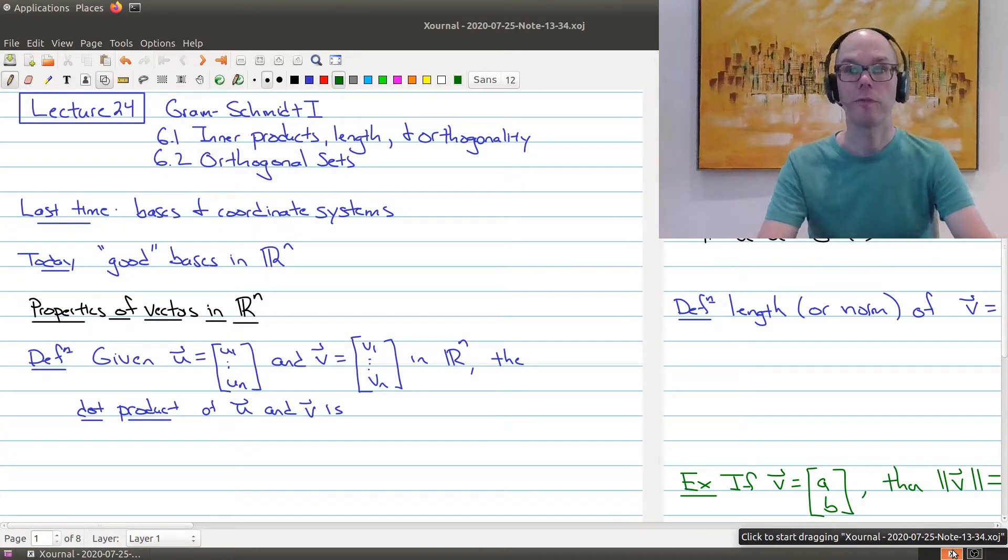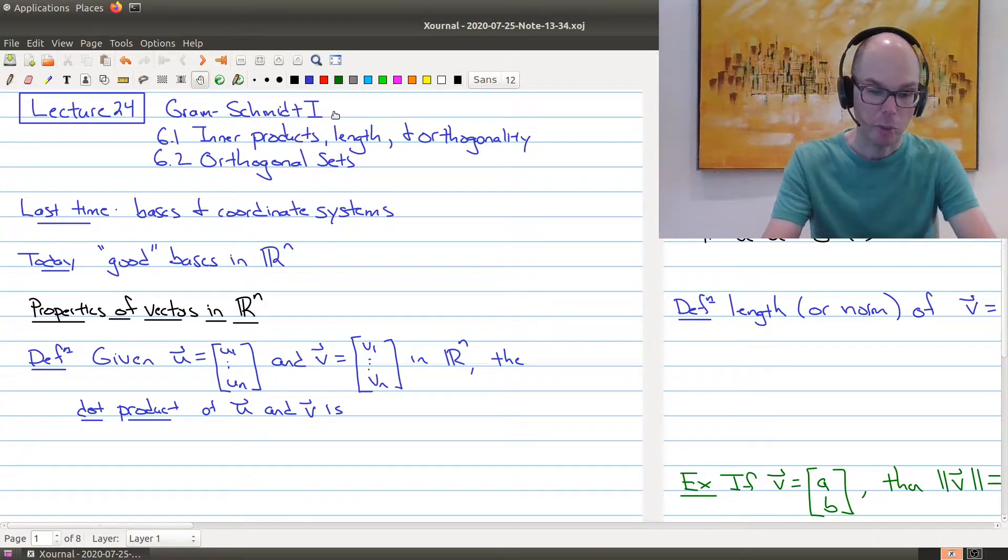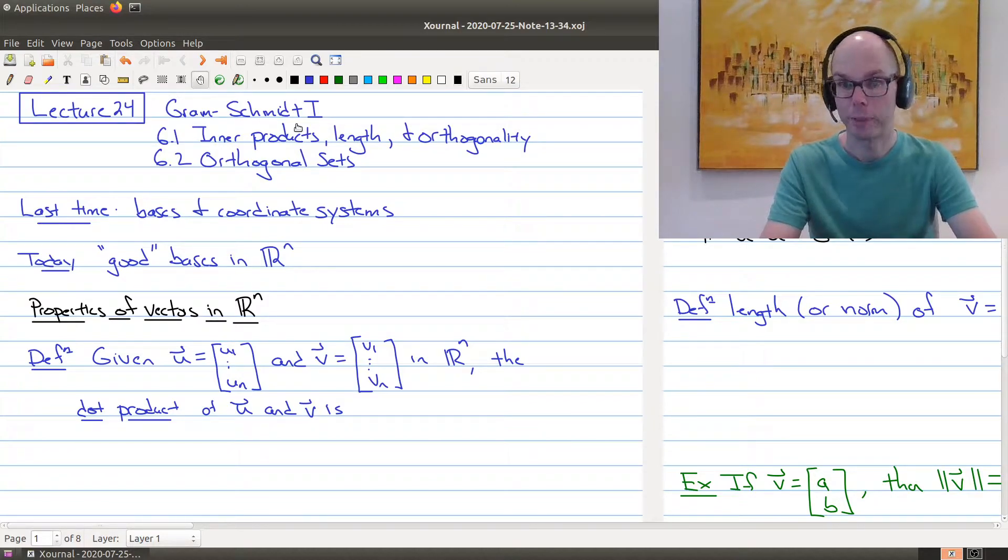Hello and welcome to Lecture 24 of Math 1B03. In today's lecture, we're going to start one of two lectures on Gram-Schmidt. Now we won't actually mention the Gram-Schmidt process today, but what we're going to be doing is building the foundation of mathematical tools that we will need to describe the Gram-Schmidt process, which we'll describe in Lecture 25. Instead, what we're going to do today is do a quick summary of what's in section 6.1 and 6.2. 6.1 is on inner products, length, and orthogonality, and 6.2 is on orthogonal sets.